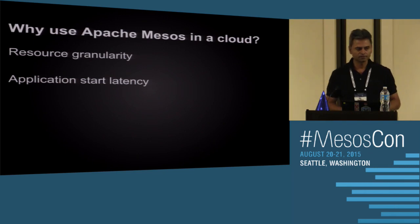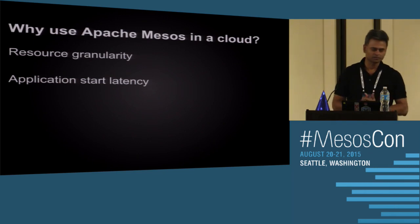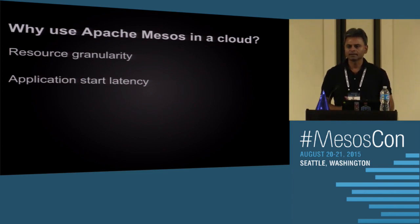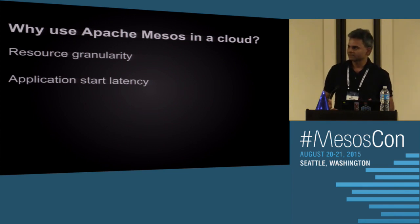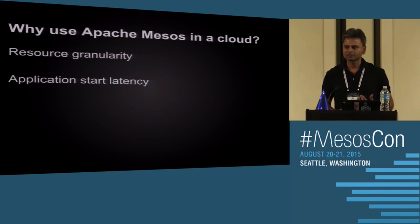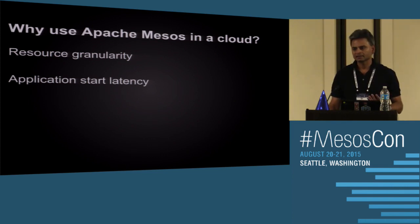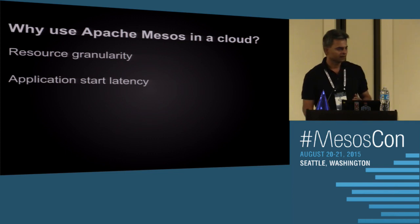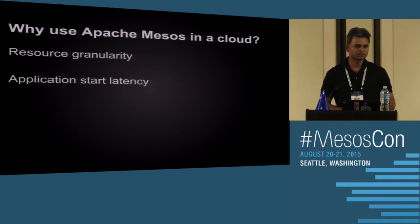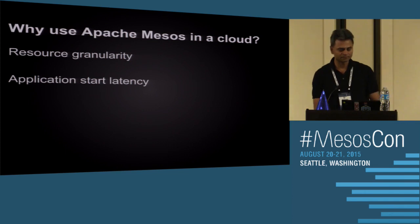One of the first questions we got asked when we started looking at Apache Mesos about 18 months ago: if we're already using an elastic cloud, why do you need to schedule resources using Mesos? There are two reasons. One is resource granularity — when you pick an instance type appropriate for network-intensive workloads, you end up with more CPUs and memory than you might use, so we can bin-pack other tasks onto it. Another reason: starting an instance takes a few minutes, versus launching a task using Mesos in a few milliseconds.